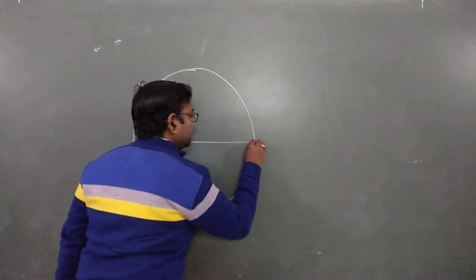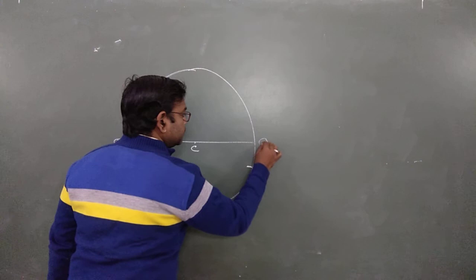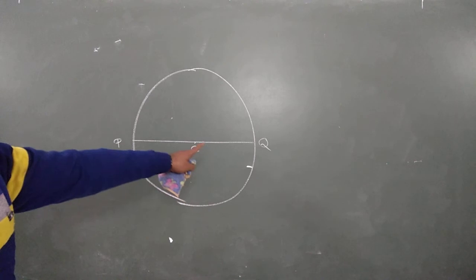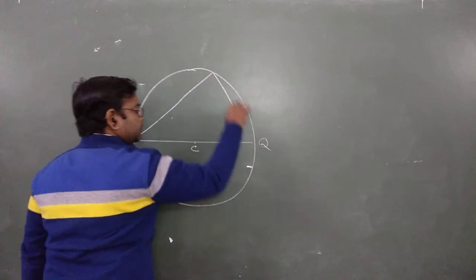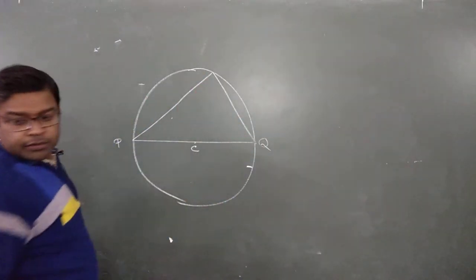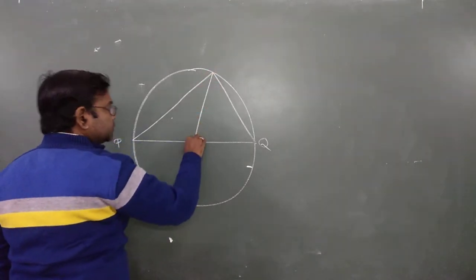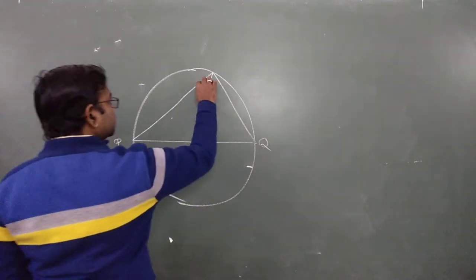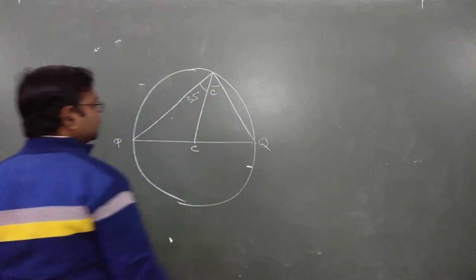Now in the next question we have a bigger circle with center C and a diameter PQ. The question says the angle made by arc PQ on the circumference of the circle is given. We also have another line creating an angle of 35 degrees, and the unknown angle is C. What is the value of C?